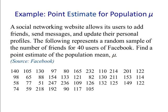Let's do an example. A social networking website allows its users to add friends, send messages, and update their personal profiles. The following represents a random sample of the number of friends for 40 users of Facebook. Find a point estimate of the population mean mu.